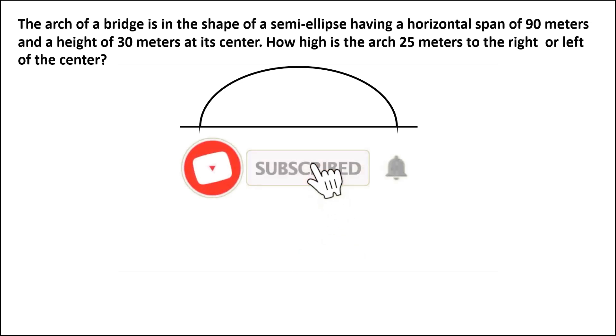Let's have this problem. The arc of a bridge is in the shape of a semi-ellipse having a horizontal span of 90 meters and a height of 30 meters at its center. How high is the arc 25 meters to the left or 25 meters to the right of the center?